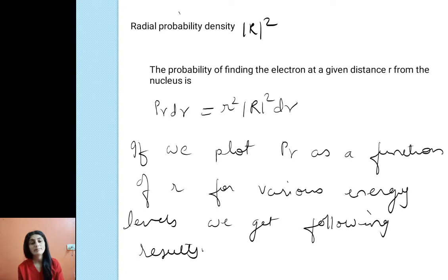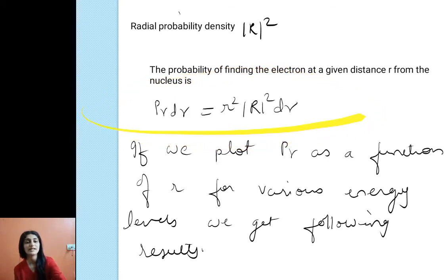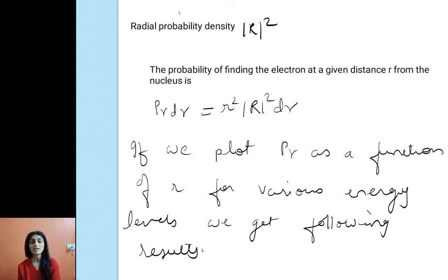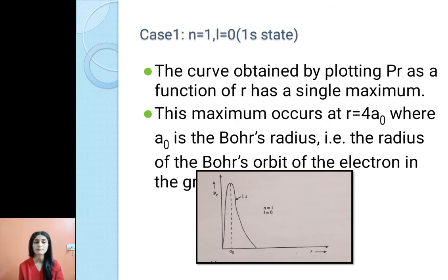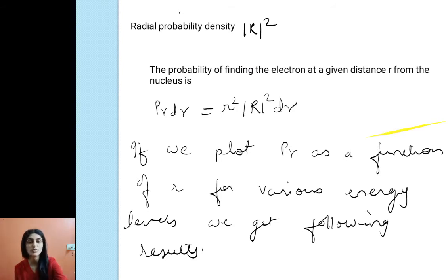Our main aim is to find the radial probability density |R|². This is the probability of finding an electron at a given distance R from the nucleus, given by P(r) dr = |R(r)|² · r² dr. If we plot P(r) as a function of R for various energy levels, we get the following results.